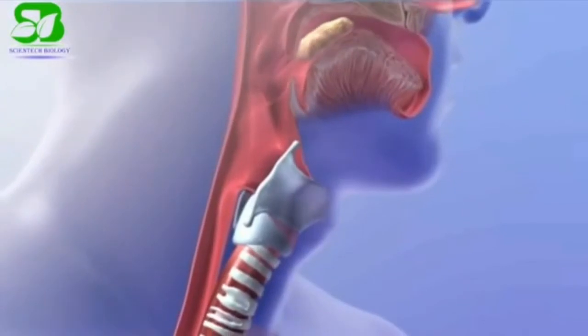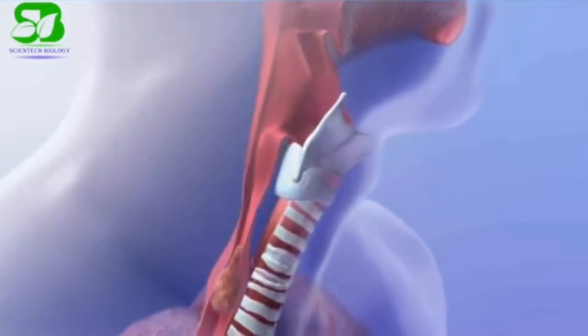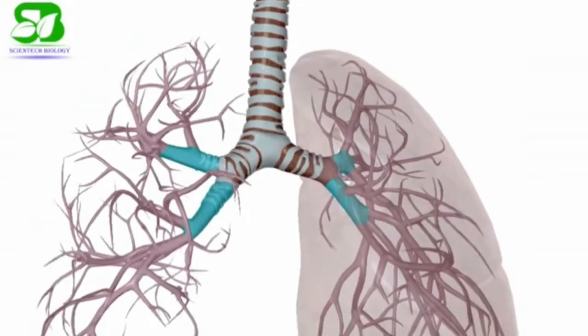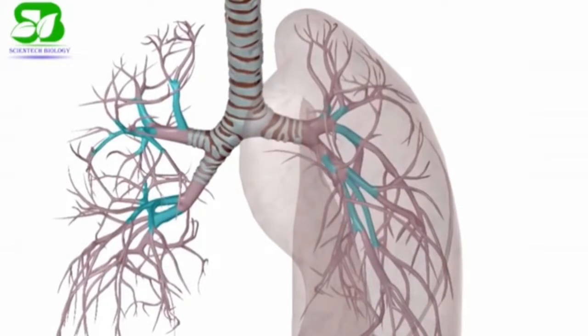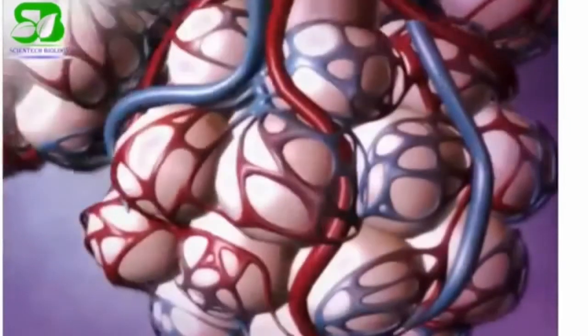The bronchi branch from the trachea — the windpipe divides into two branches. These branches further divide into bronchioles. The bronchioles have bronchial cells, and at their ends are air sacs called alveoli. Alveolus is the singular form of alveoli.